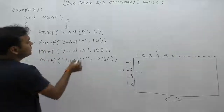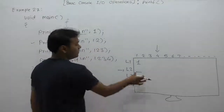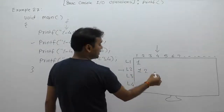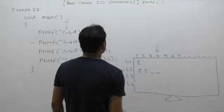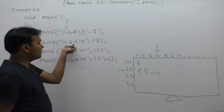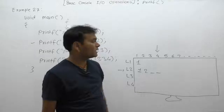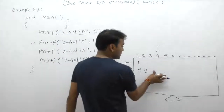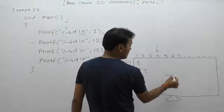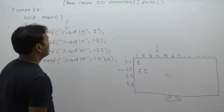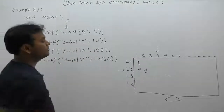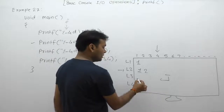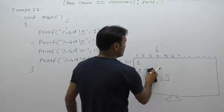According to the second printf, we are displaying the number 12, a two-digit number. How many spaces are filled? Since we are supplying total width as four, every number is displayed in the form of four characters. After displaying the two digits, two spaces are filled, and the cursor is again on the fifth position. According to slash-n, the cursor moves to the beginning of the next line.